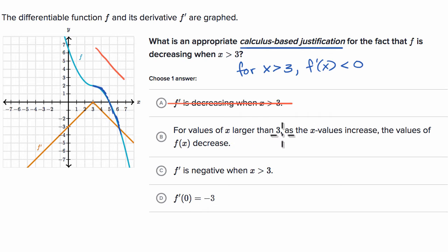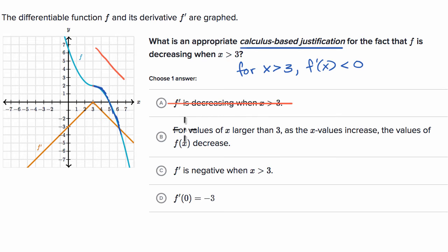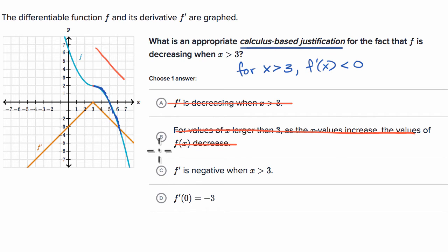The next choice says: for values of x larger than three, as x values increase, the values of f of x decrease. That is actually true — this is the definition that f is decreasing. But this is not a calculus-based justification, so I'm ruling this one out as well. The next choice says f prime is negative when x is greater than three — that's exactly what I wrote. If f prime is negative, the slope of the tangent line of f is downward sloping, meaning our function is decreasing. So this one is correct.